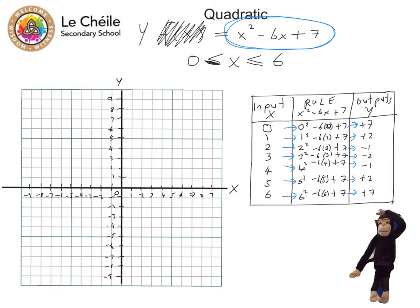And now I have all the information I need to be able to plot my graph, or plot my function. So to put the points onto here, onto my coordinate plane, let's create some couples. So the x value is 0, and the y value is 7. The next couple is 1 and 2, then 2 and minus 1, and so on.